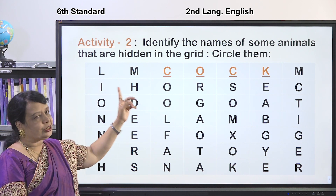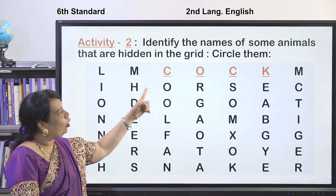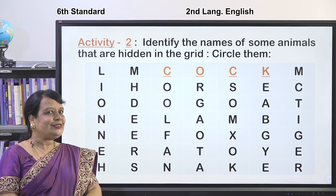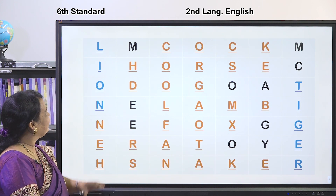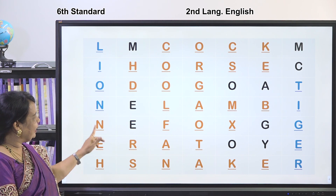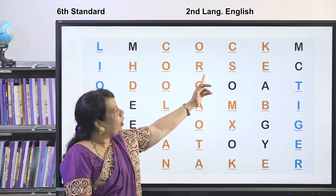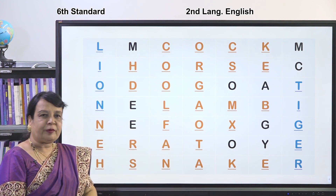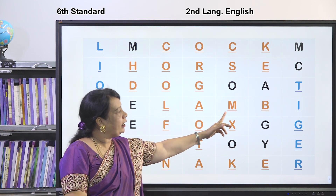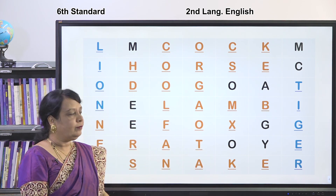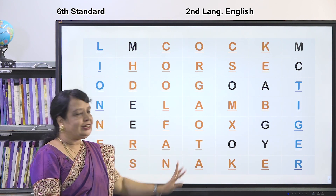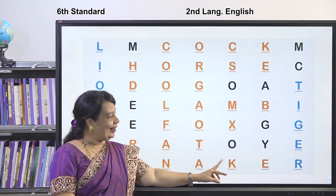Now you are going to write the grid, circle all the animals, and then color it. Let's look at the answers: L-I-O-N, lion; H-E-N, hen; H-O-R-S-E, horse; D-O-G, dog; L-A-M-B, lamb; F-O-X, fox; R-A-T, rat; N-A-K-E, snake.